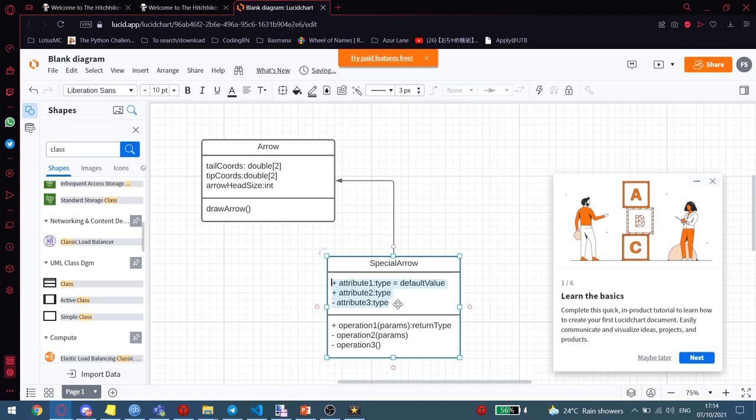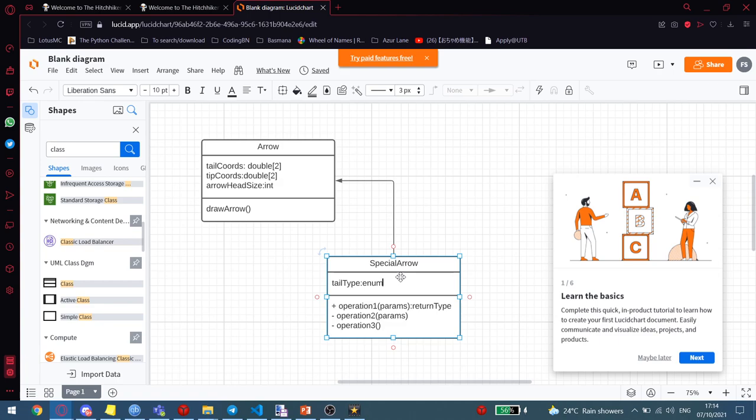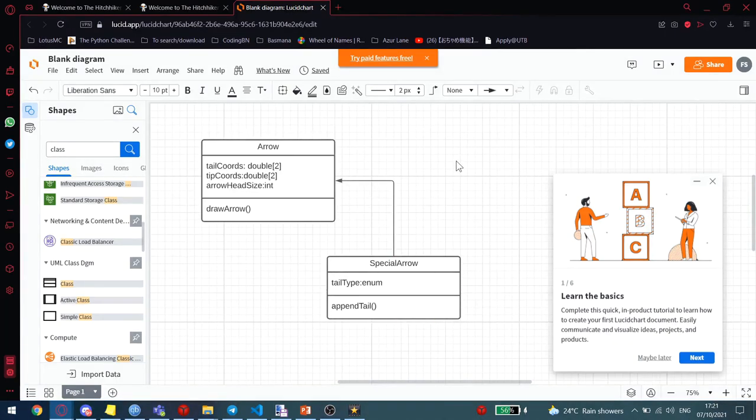And this will be called SpecialArrow. I will inherit the basic attributes. But now we will be needing a new attribute called arrowtail type. This can be an enum or a list, or even just a string. The method will be append tail. And that's it. You also need to change the arrowhead type.